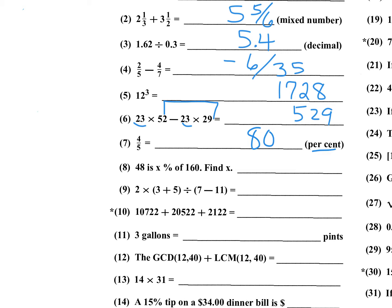Number 8: 48 is what percent of 160? I'm thinking 48 over 160 times 100. I can reduce by a factor of 16 — 16 goes into 48 three times and into 160 ten times. So 3 is what percent of 10? That's 30 percent.